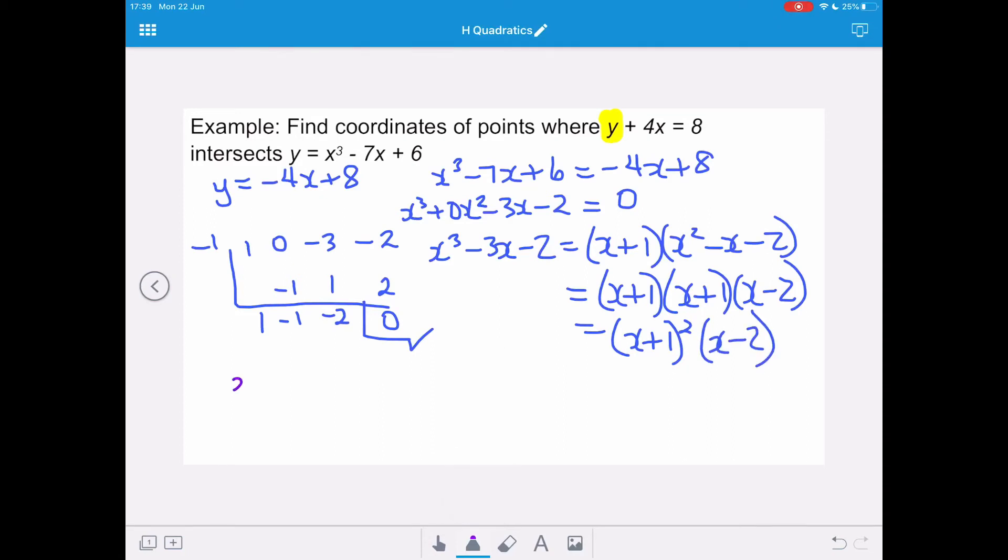Now to find the points of intersection, we need to equate that to 0, giving us x plus 1 all squared upon x minus 2 equals 0. And then we want to equate each bracket to 0 in order to get our solutions of x equals negative 1 and x equals 2.